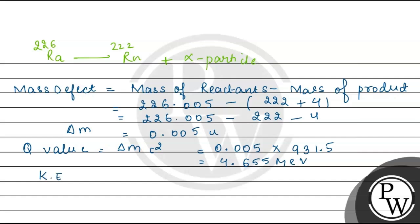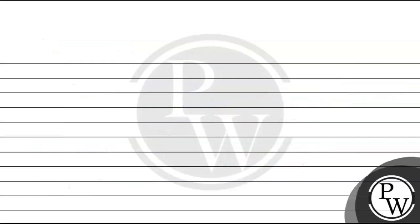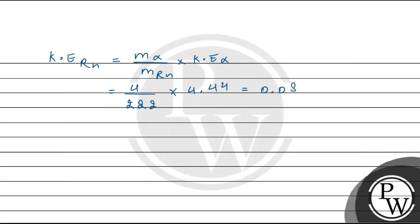Using momentum conservation, kinetic energy of alpha particle divided by kinetic energy of radon equals mass of radon upon mass of alpha particle. So kinetic energy of radon = (mass of alpha / mass of radon) × KE of alpha = (4/222) × 4.44 MeV ≈ 0.08 MeV.